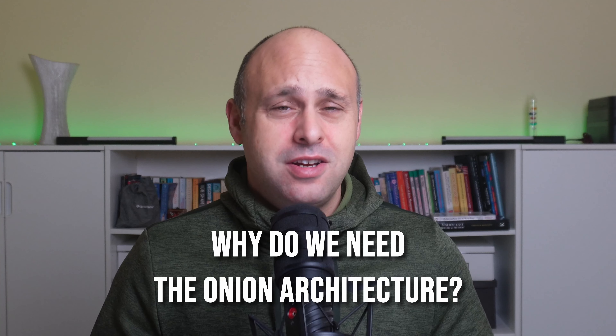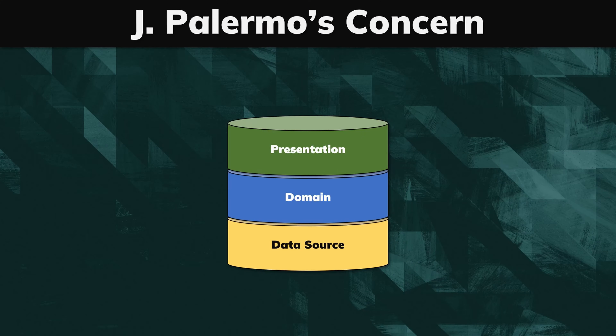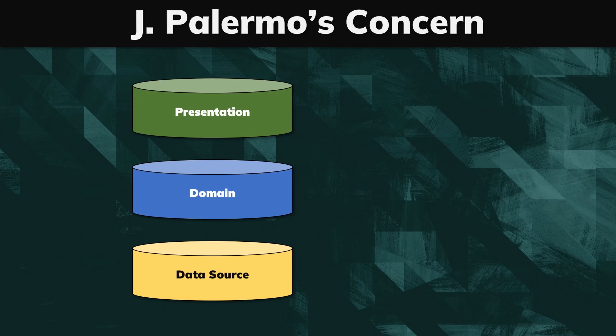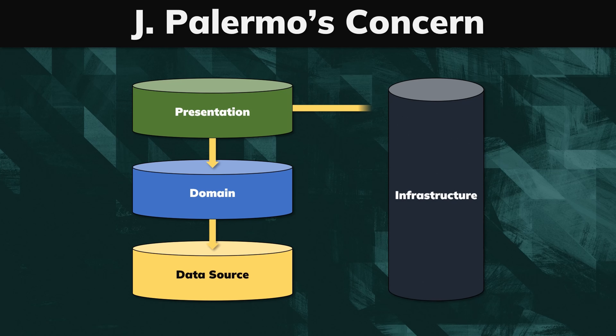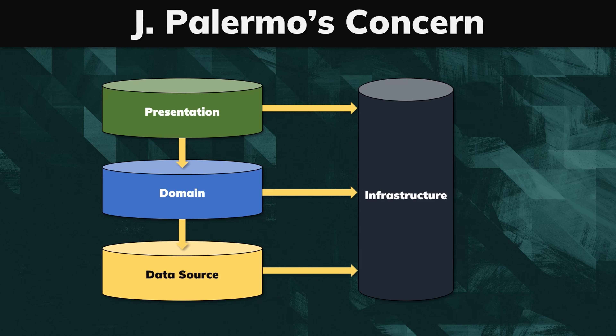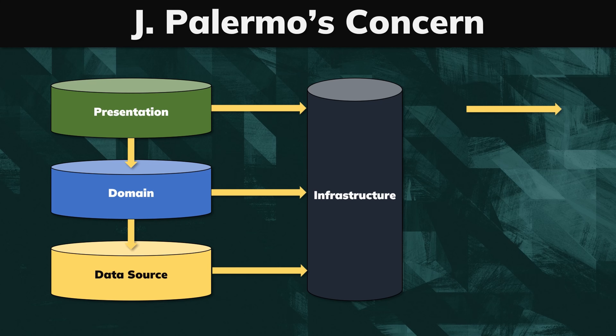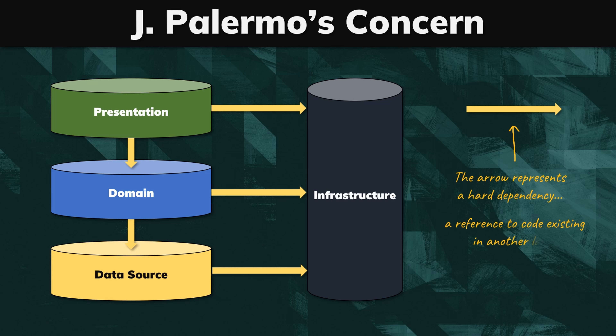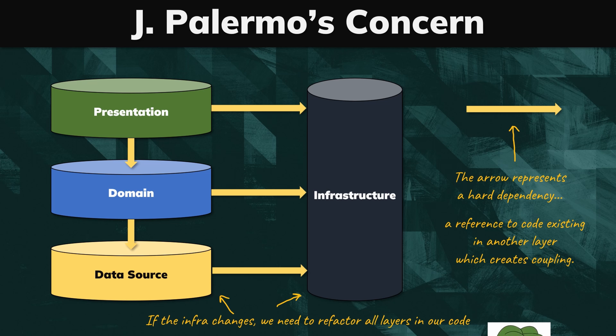The answer is given by Jeffrey Palermo, who in 2008 introduced the onion architecture to the world. His main concern with the traditional three-layer architecture is that it doesn't prevent coupling between the business logic and the infrastructure. If the infrastructure changes, there's a high chance we need to refactor the domain layer as well.